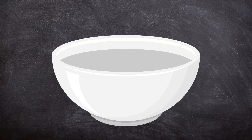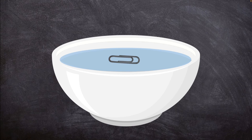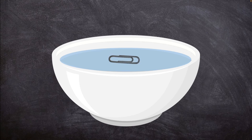It's fun to experiment with surface tension. Try filling a bowl with water and then carefully resting a paper clip on the surface. What happens? If you were careful, the paper clip should stay on the surface of the water, just like a water strider.